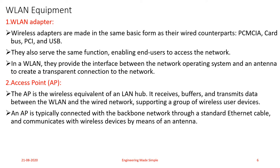An access point is typically connected to the backbone network through a standard Ethernet cable and communicates with wireless devices by means of an antenna. A simple example of an access point is a wireless router: a backbone cable is connected to the router's WAN port, and using the antenna it distributes the network connection wirelessly to user devices. In this case, the Wi-Fi router's antenna acts as the access point, distributing the signal wirelessly to connected devices.